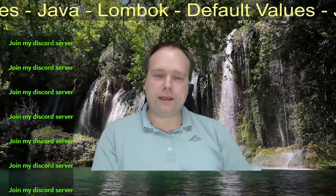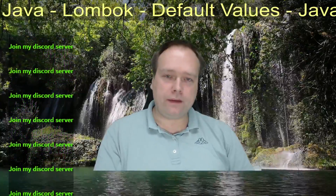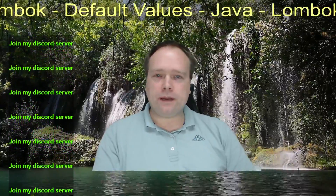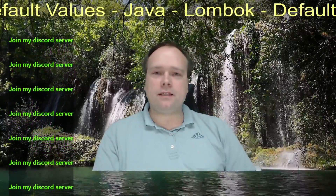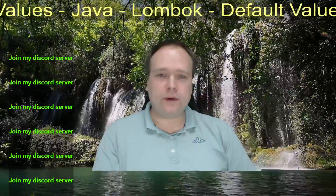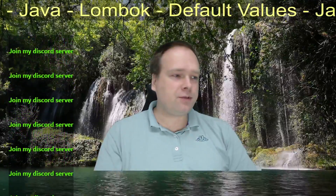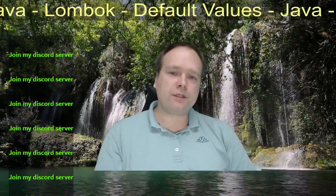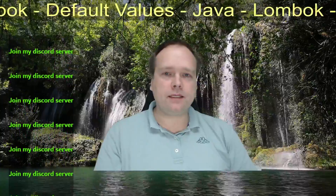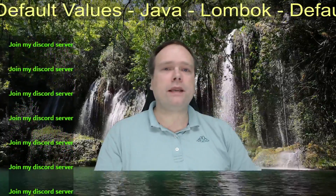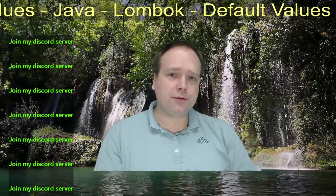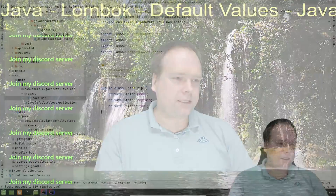Tonight we're going to look into how we can set default values for our classes, because many times we know that it's the same values that we need every time, especially for certain fields. Maybe we have a flow where we have some fields that are the same in the beginning always, and then we will change when we go through some kind of workflow. We're going to create a spaceship tonight, set some default values, and also use Lombok's builder pattern. We'll also see how we can create a Lombok builder from an existing class. It is quite easy as usual. So let's get started.